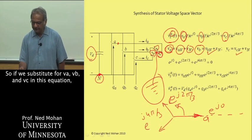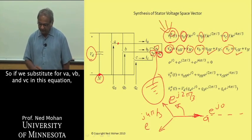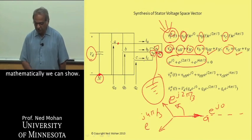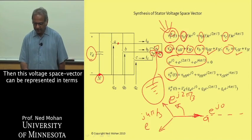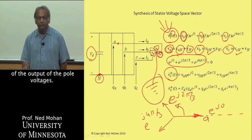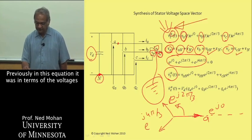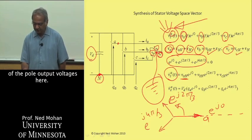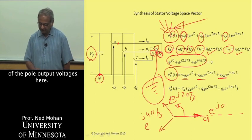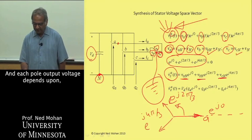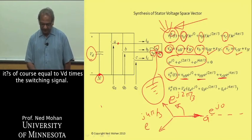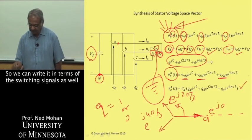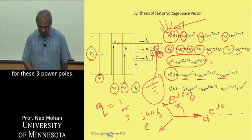If you substitute for VA, VB, and VC in this equation, and recognizing that the sum of these three is equal to zero, mathematically we can show then this voltage space vector can be represented in terms of the output of the pole voltages. Previously in this equation it was in terms of the voltages across the load, whereas this equation here is in terms of the pole output voltages. Each pole output voltage is equal to VD times the switching signal, and this switching signal Q would be either one or zero. We can write it in terms of the switching signals as well for these three power poles here.